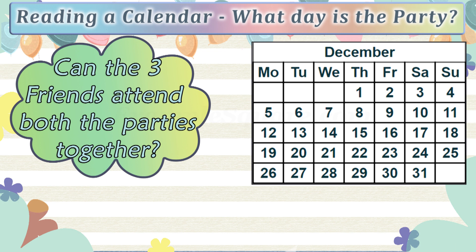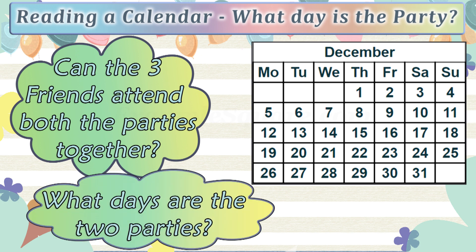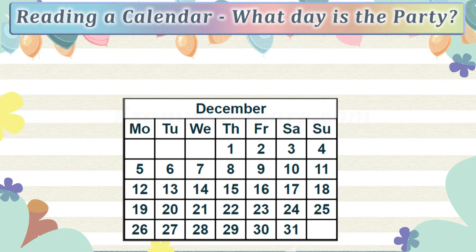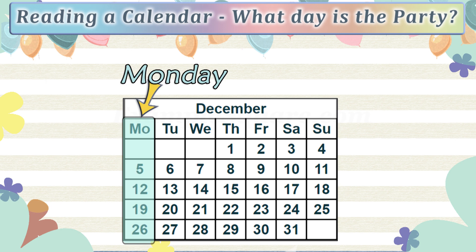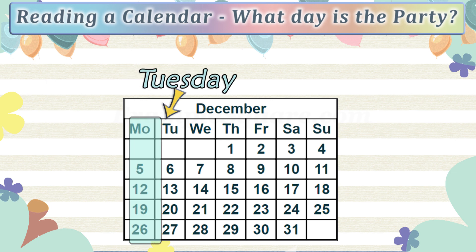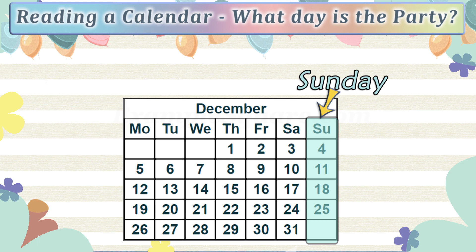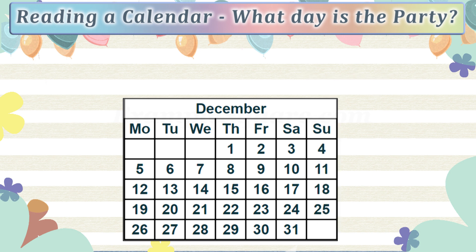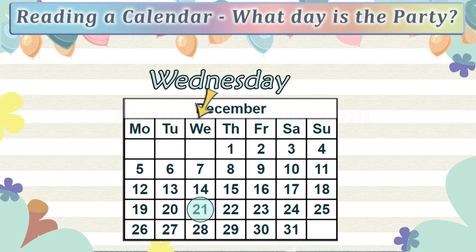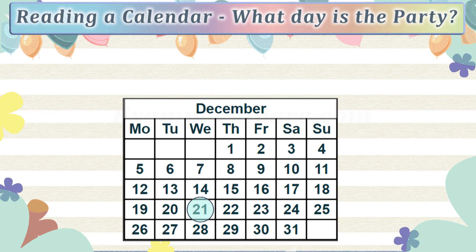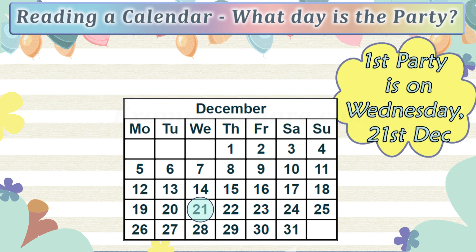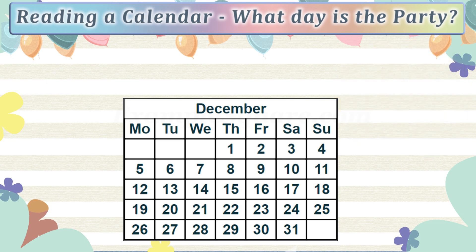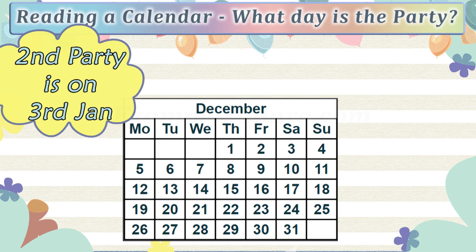The friends are wondering if all three of them can attend both parties. A calendar for the month of December is shown. The top of the calendar shows the days, with the first column corresponding to Monday, the second to Tuesday, and so on, with the last column corresponding to Sunday. The 21st of December falls in the column corresponding to Wednesday, so the first party is on Wednesday the 21st of December.